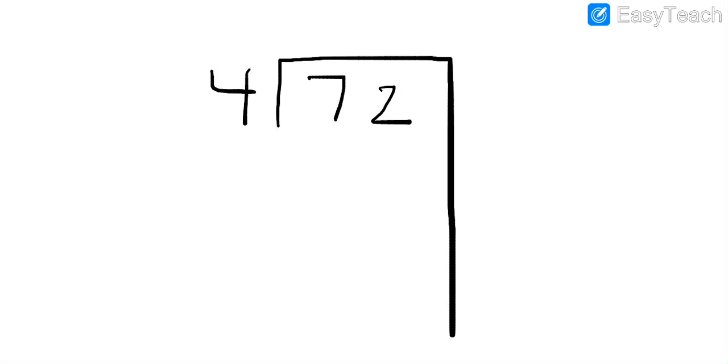Our next step is to start thinking about fours facts. So what fours facts do I know? An easy one is, I know 4 times 10. 4 times 10 is 40. So I'm going to write down 10 here on the side. And I'm going to record 4 times 10 is 40 right below here.